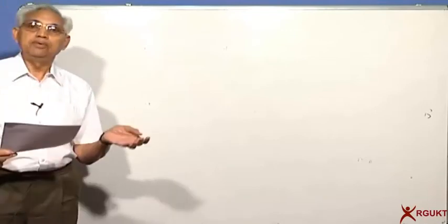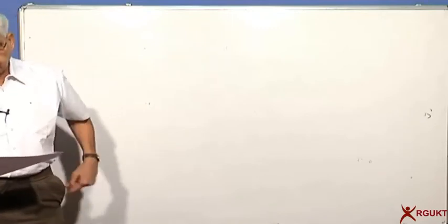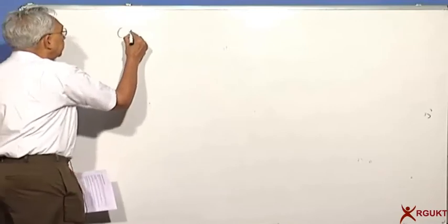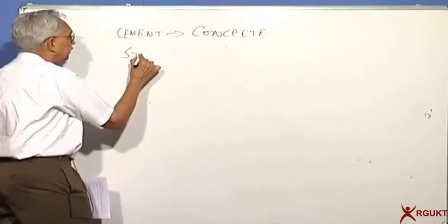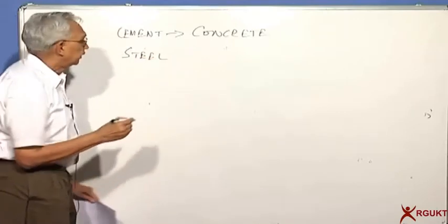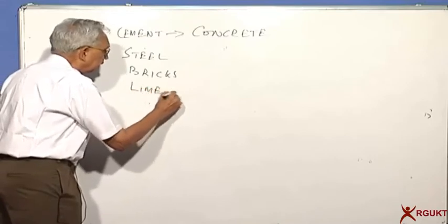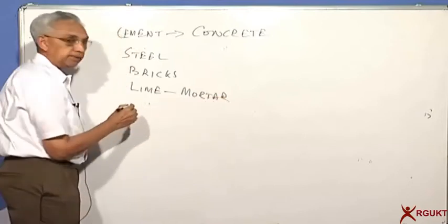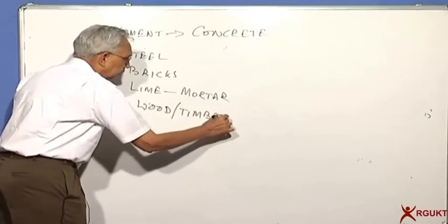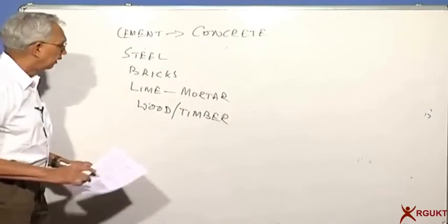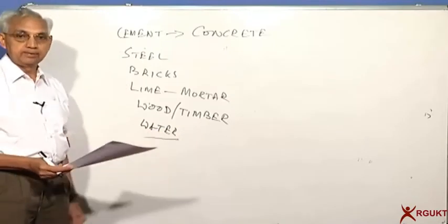What is special about the ground? If you look at the ground, it usually consists of different types of soils. As civil engineers, you will be using materials like cement and its derived component concrete, steel as reinforcement or structural component, bricks, lime as mortar, and wood or timber for doors and windows. Civil engineers also deal with water as part of hydraulics, irrigation, and groundwater.